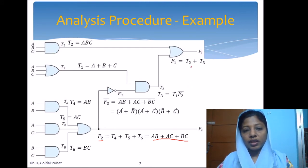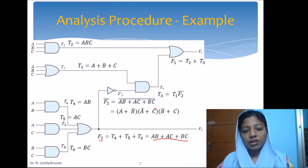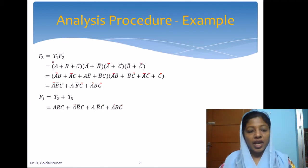To compute F1, we need T2 = ABC, which is directly in terms of input variables, and T3 = T1 · F2'. T1 is directly in terms of the inputs as A + B + C. We also need to compute F2 complement. F2' is the complement of (AB + AC + BC). Applying De Morgan's law, this becomes (A' + B')(A' + C')(B' + C').